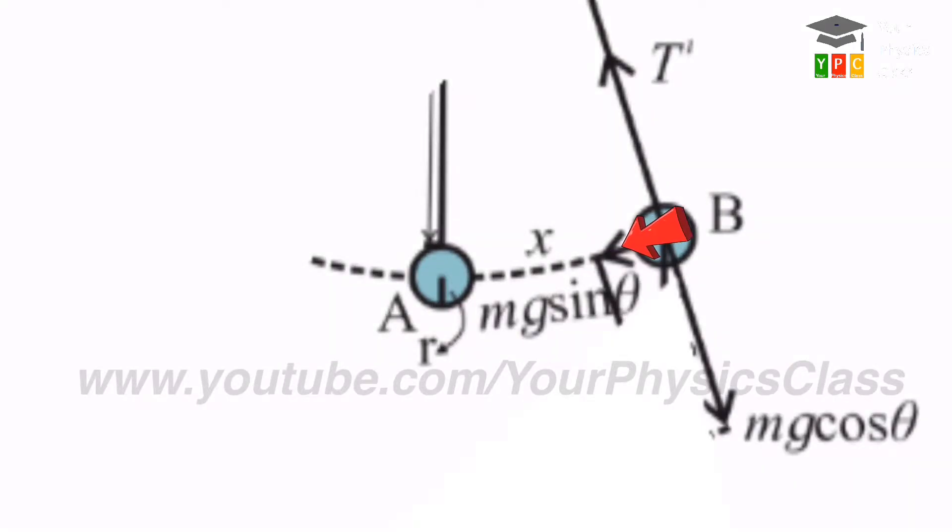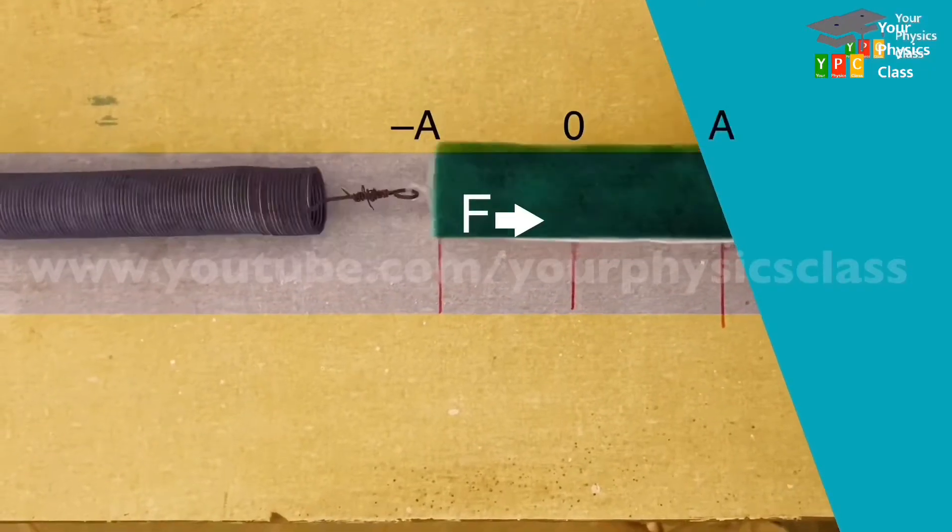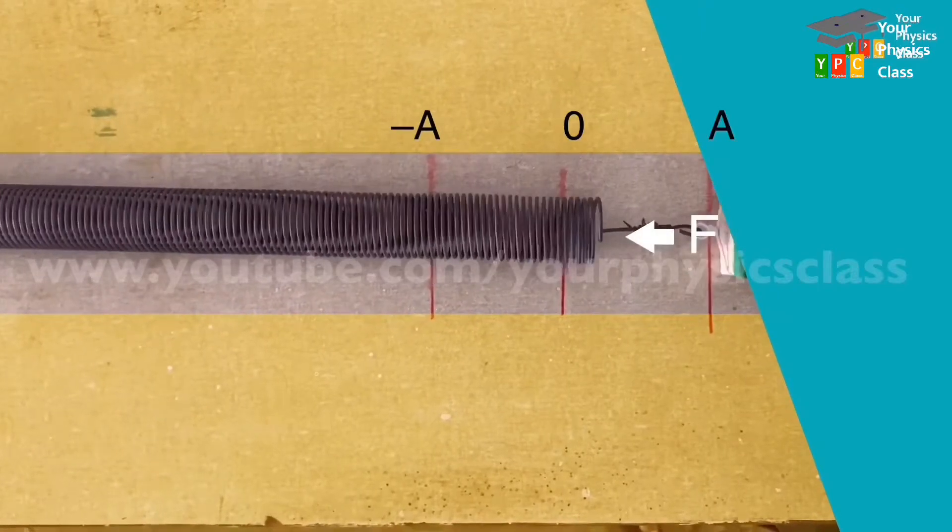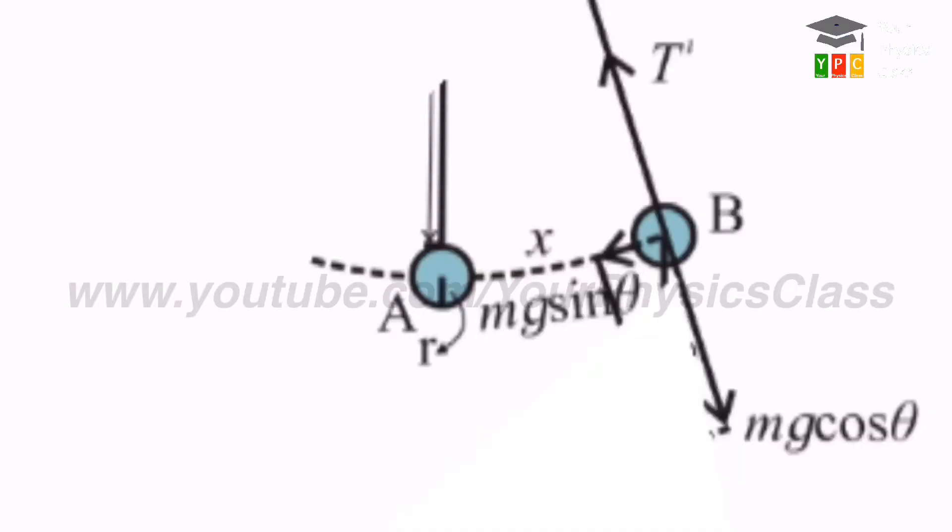But the unbalanced force directed toward the mean position will be the cause of its motion. Remember, in oscillatory motion, any real force directed towards mean position is called restoring force. Hence, mg sin theta is restoring force. So F equals minus mg sin theta which is responsible for oscillatory motion.